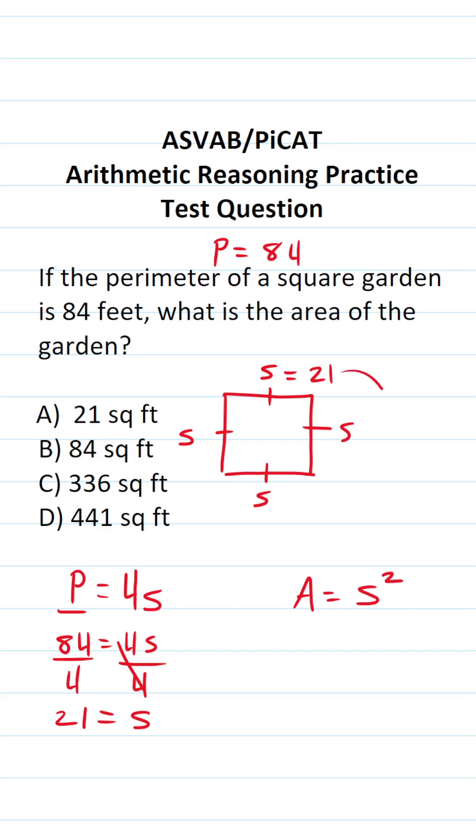In order to calculate its area, we're going to plug in 21 for S here. This becomes 21 squared, which is the same thing as 21 times 21. And since most of you probably can't do that mentally, we're going to work it off to the side. We have 21 times 21.